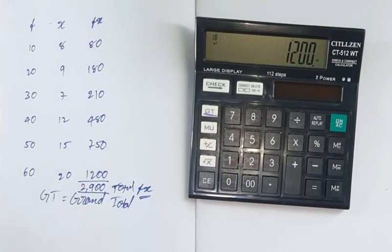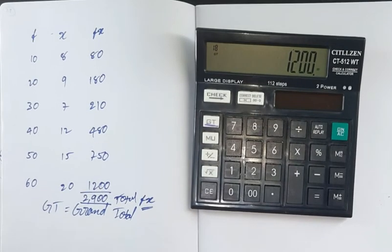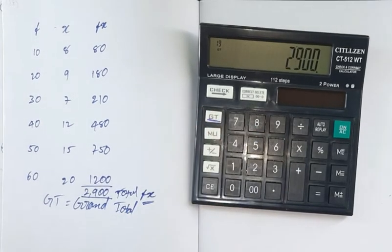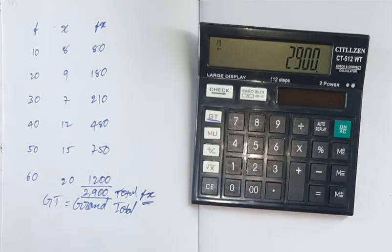Now, when we press on AC, on and on. Now, GT press. What did we do? It was 2,900. So, we will do calculations with GT.